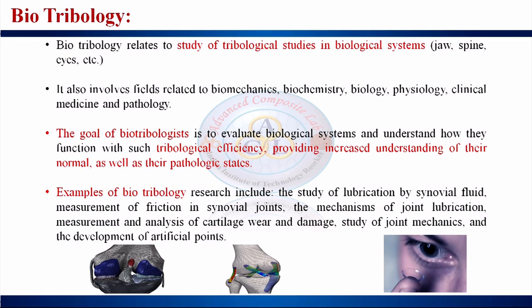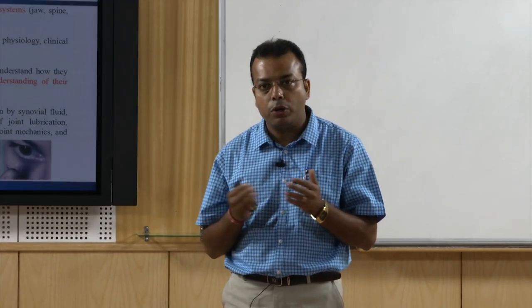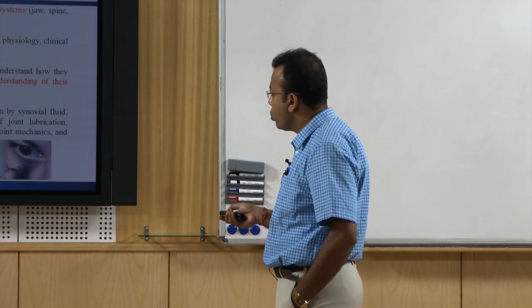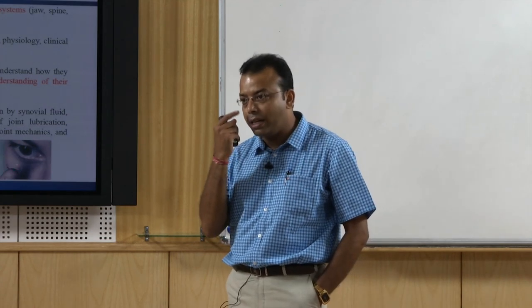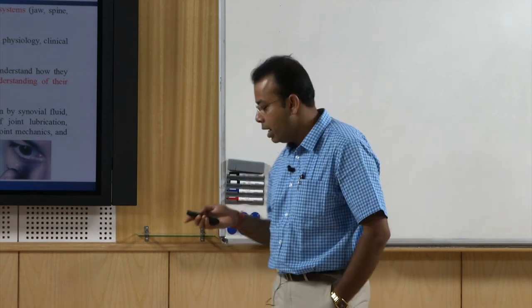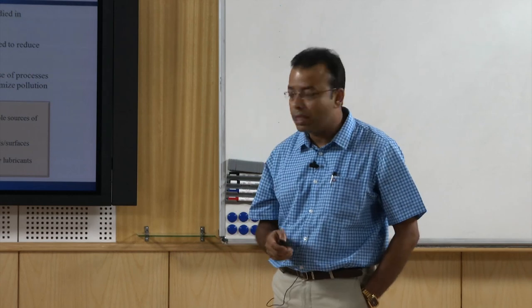The goal of a biotribologist is to evaluate biological systems and understand how they function with tribological efficiency, providing increased understanding of both normal and pathological aspects. Joint structures in the elbow, knee, or hip experience constant daily tribological effects. Contact lenses continuously rub against the eyelids, creating tribological parameters.